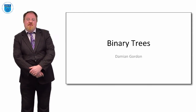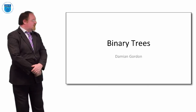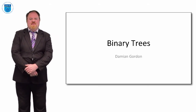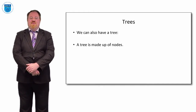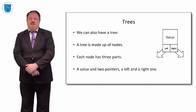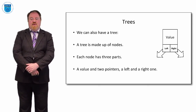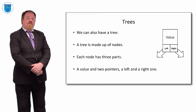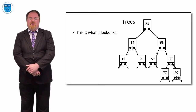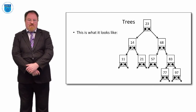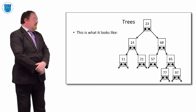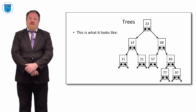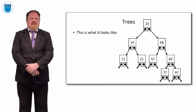Welcome to this episode on programming and algorithms. Today we're looking at binary trees. A binary tree is made up of nodes, and each node has three parts: a value, a left pointer, and a right pointer. Here's an example of a full binary tree — the top node has value 23, pointing left to 14 and right to 68.